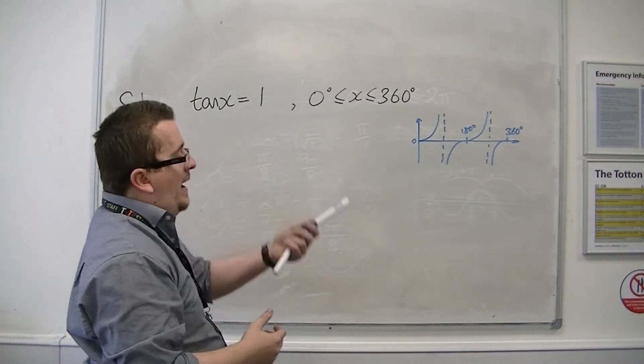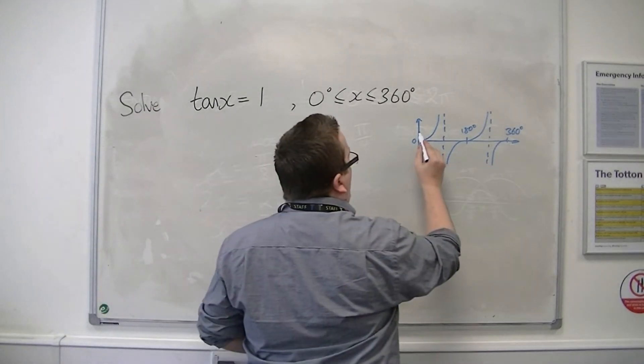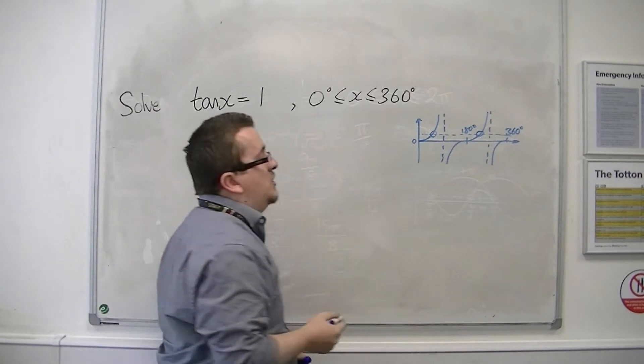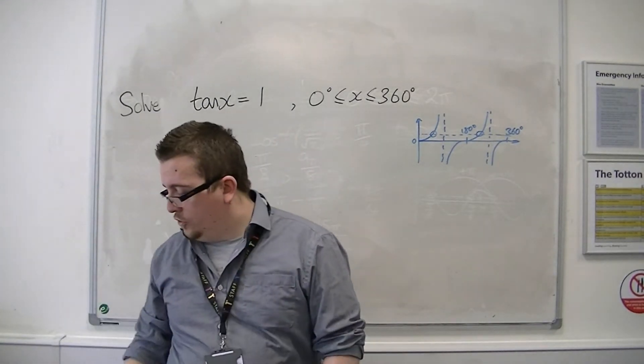So if I'm looking at tan x equals 1, then 1 will intersect the curve at two distinct points. So I'm going to be looking for two solutions.